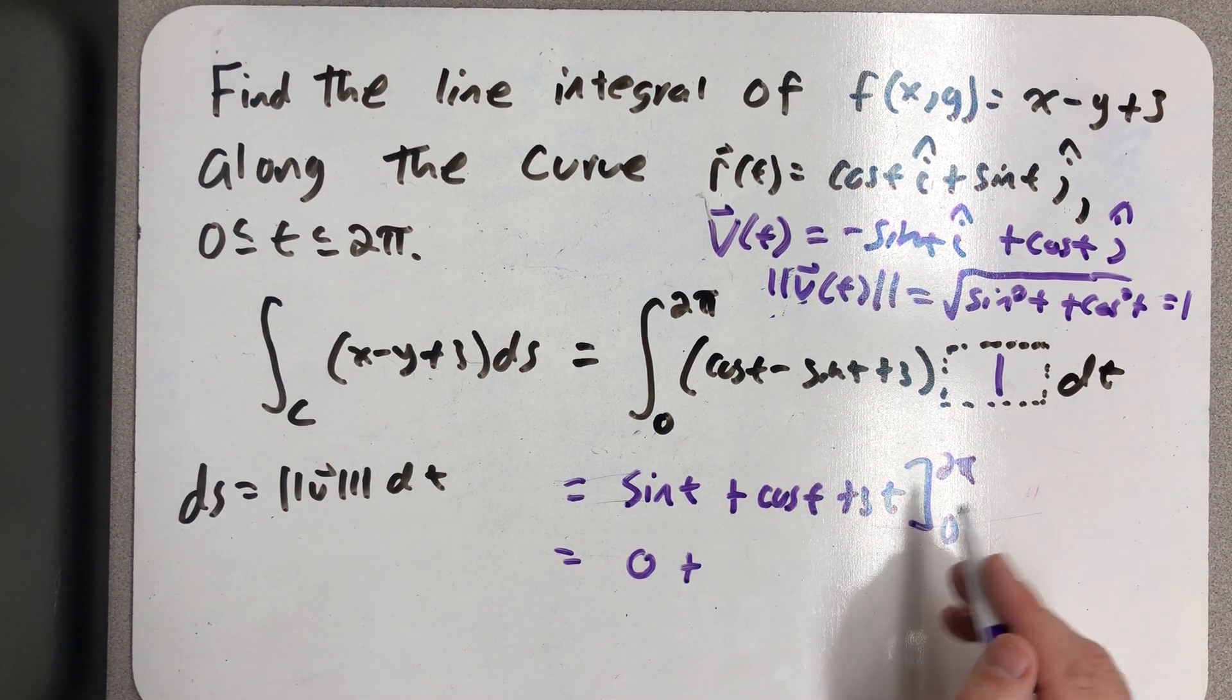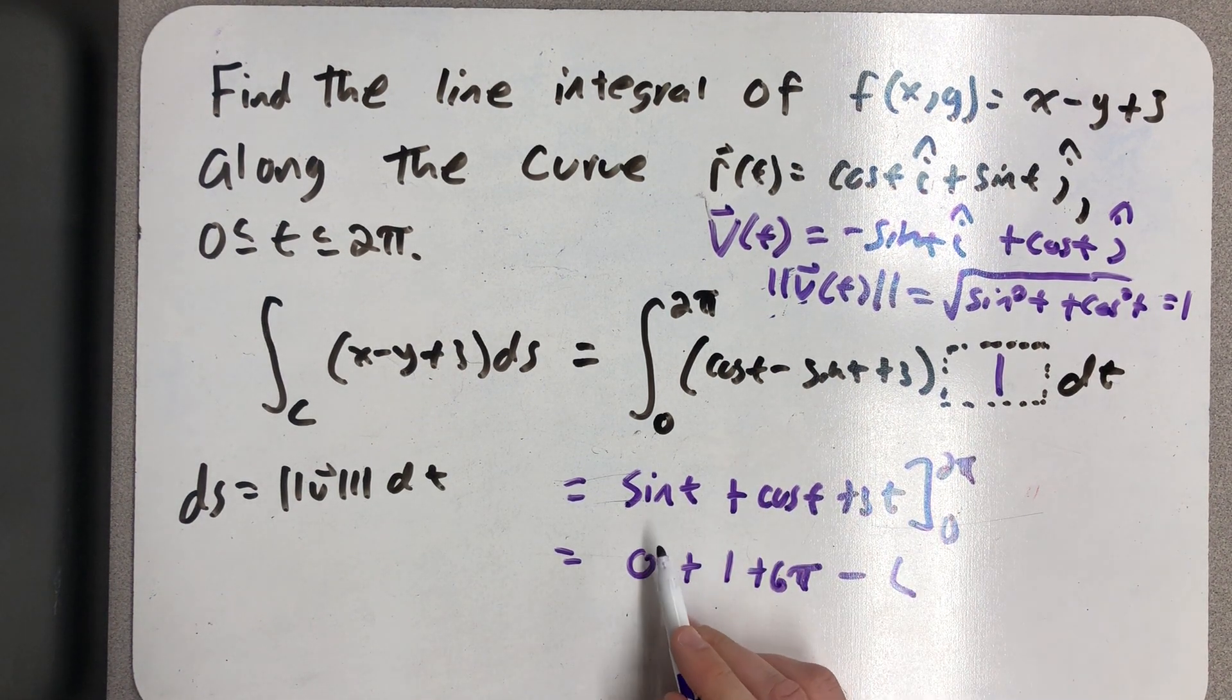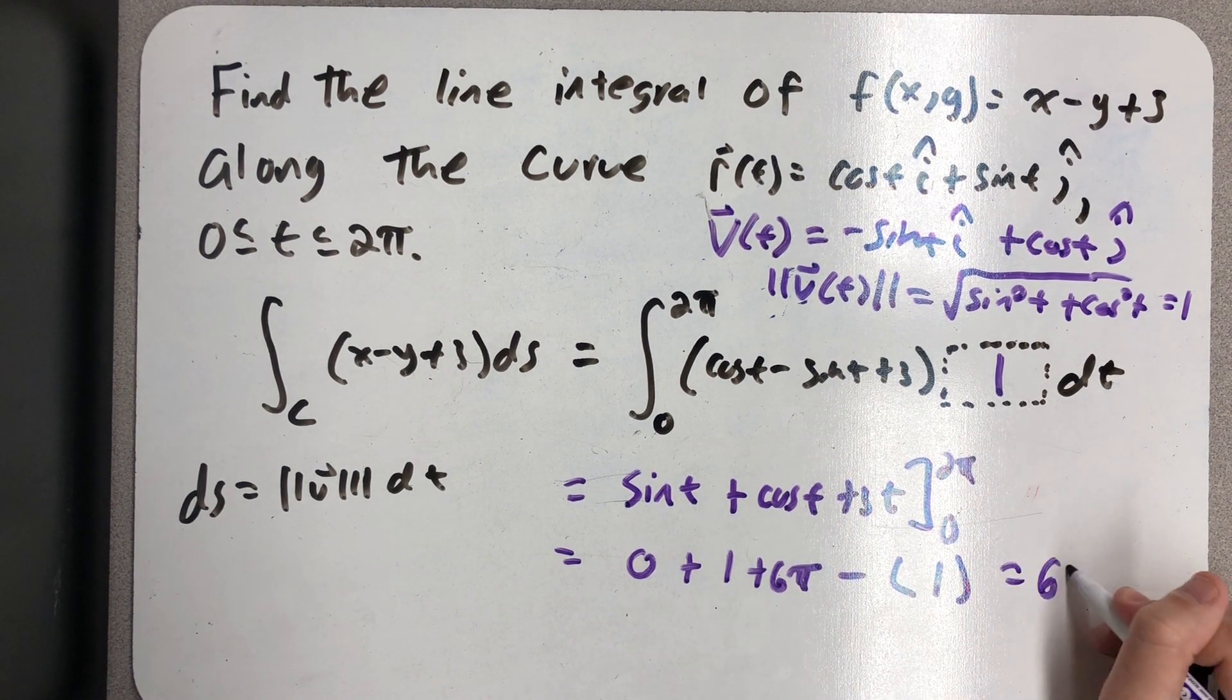Let's see, 0, 1, 6π minus 0, 1, and 0. So just a 1 there, and I just get 6 times π.